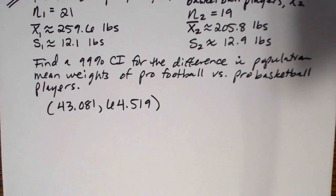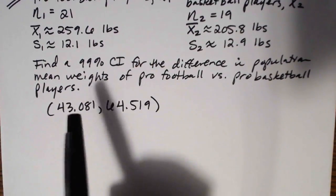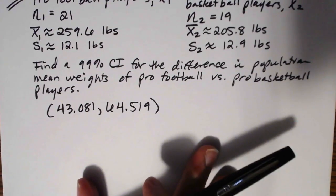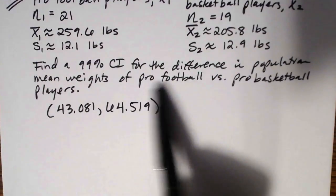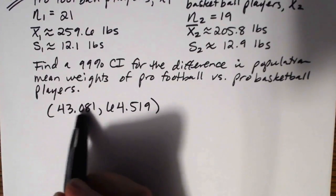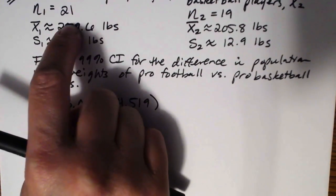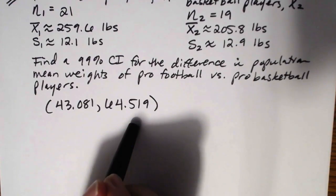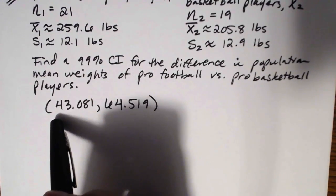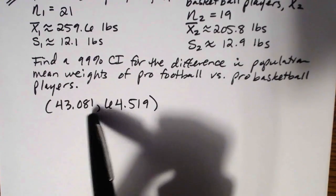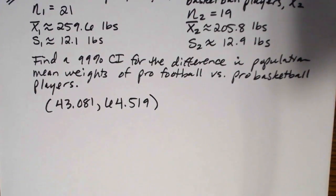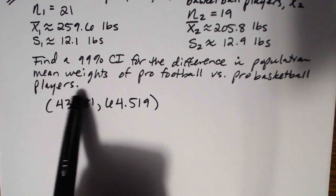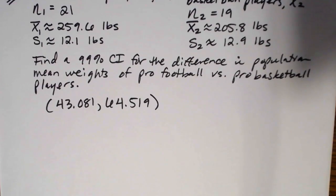Here's the thing you have to be really careful of when interpreting these. Most people, because we know we're estimating the difference in population mean weights of pro football and pro basketball players, tend to look at the two endpoints and think the first goes with the first group and the second goes with the second group. But that would mean saying football players average 43 pounds and basketball players average 64 pounds, which makes no logical sense. This interval is not about the two groups separately — it's comparing them.